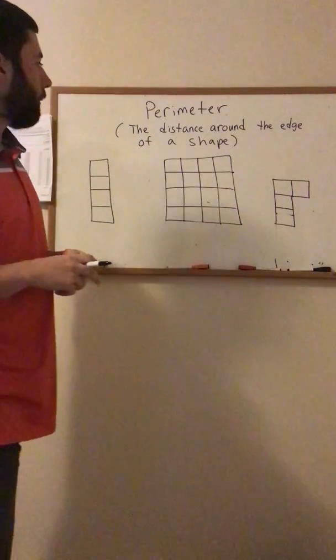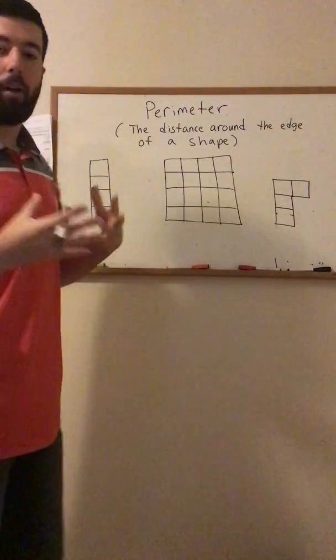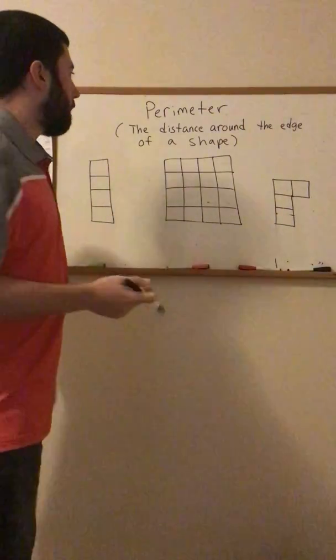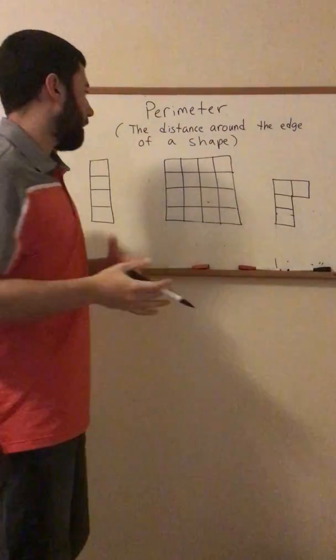Okay, hello third grade. I'm going to show you how to find the perimeter by counting unit squares. So first we're going to go over what the perimeter is.